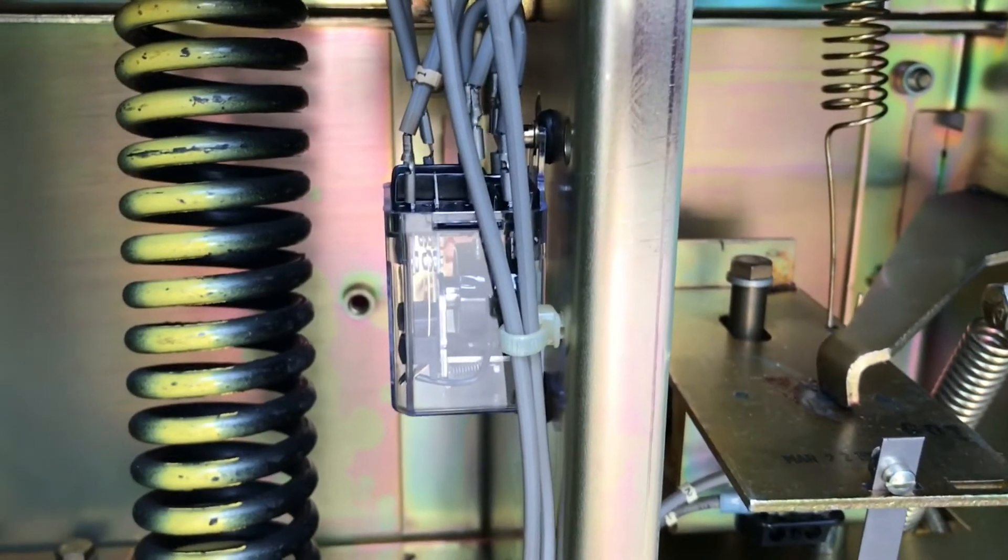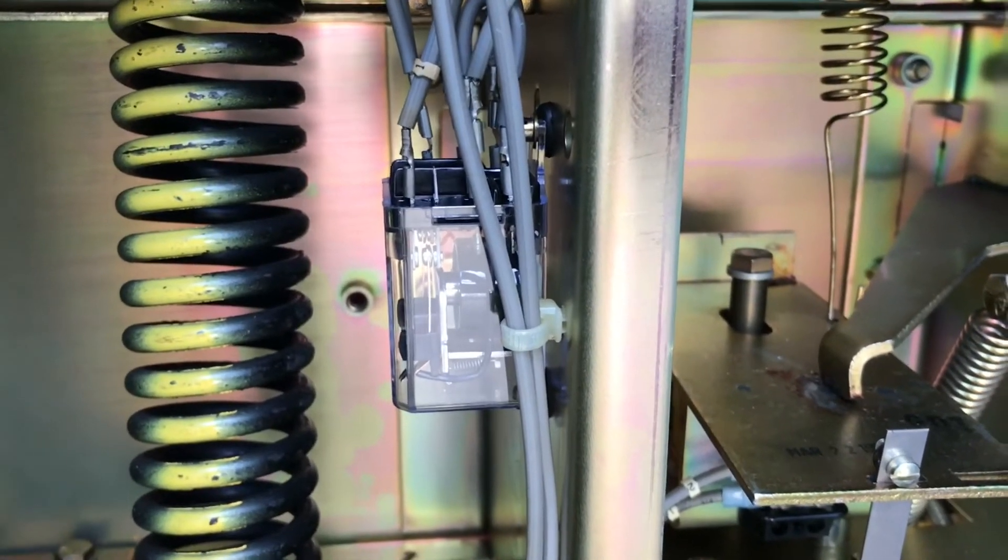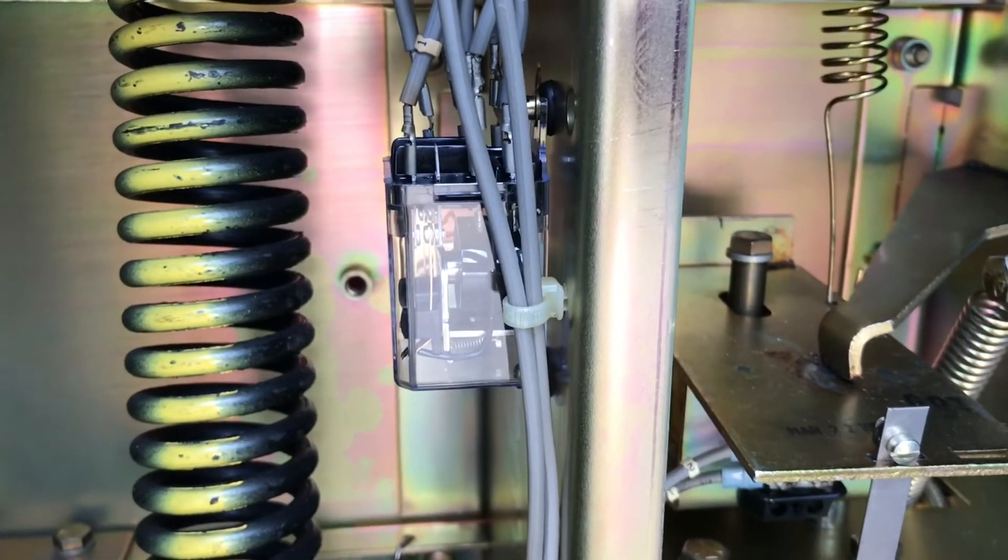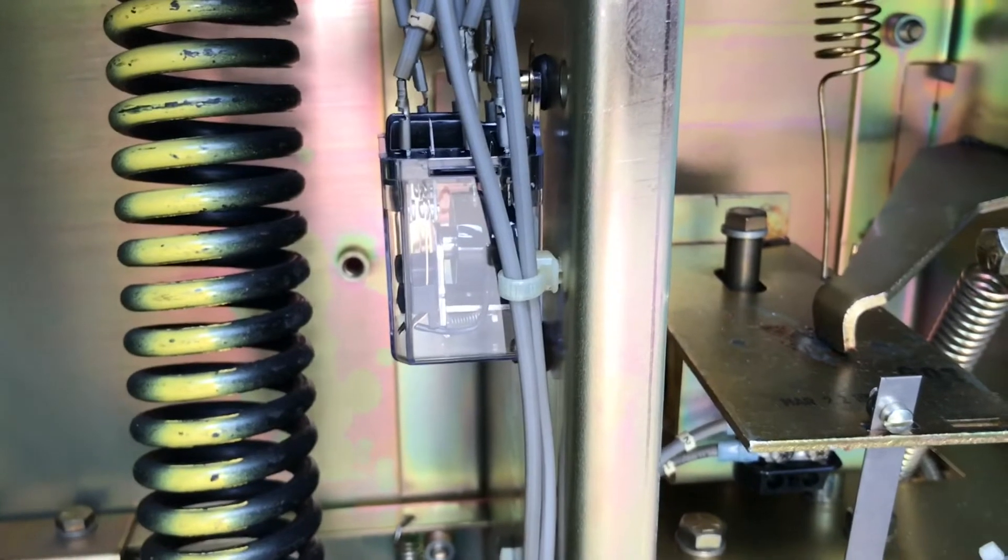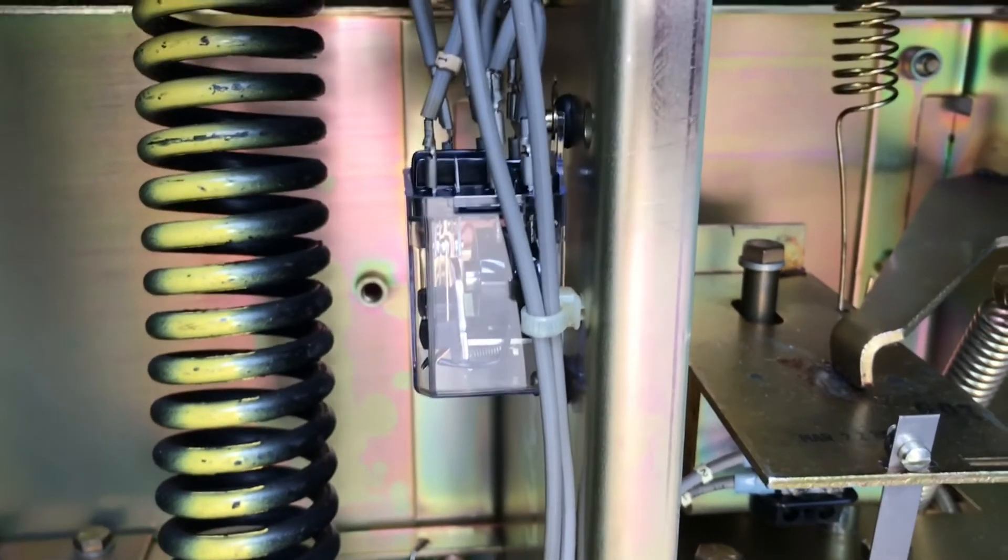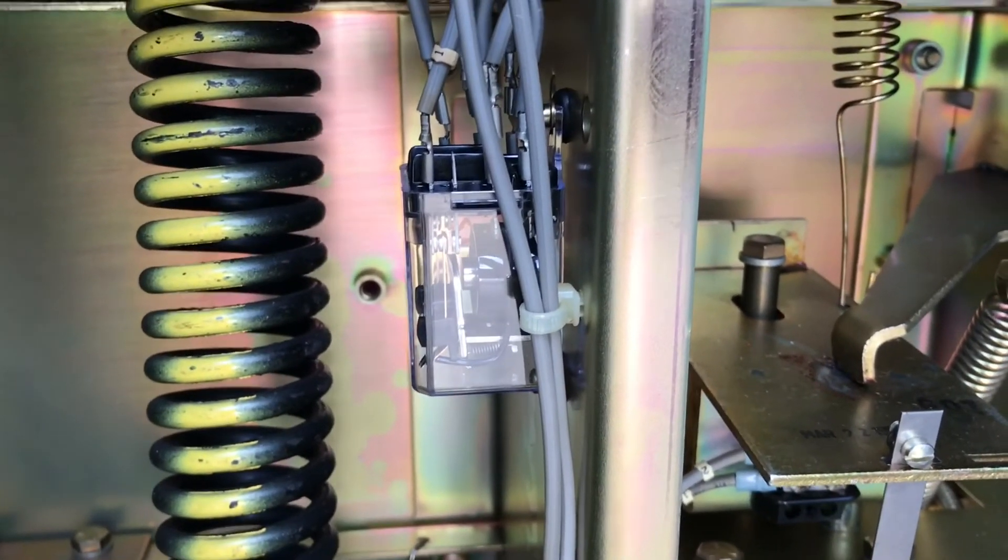I'm still holding the switch, that anti-pump is still energized. But with that being energized, it opens the circuit to the closing coil so that it can't attempt to close again. All right, I'm going to release the control switch, and the anti-pump relay opens.